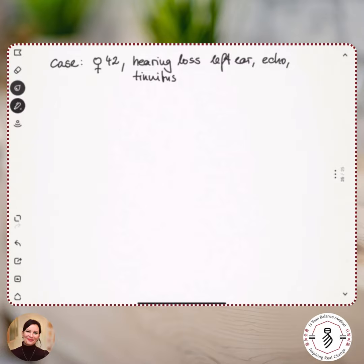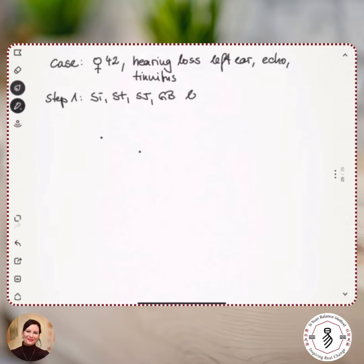So what did I do? My step one: I did my diagnosis and I found the small intestine meridian, the stomach meridian, the san jiao and gallbladder meridian on the left side.